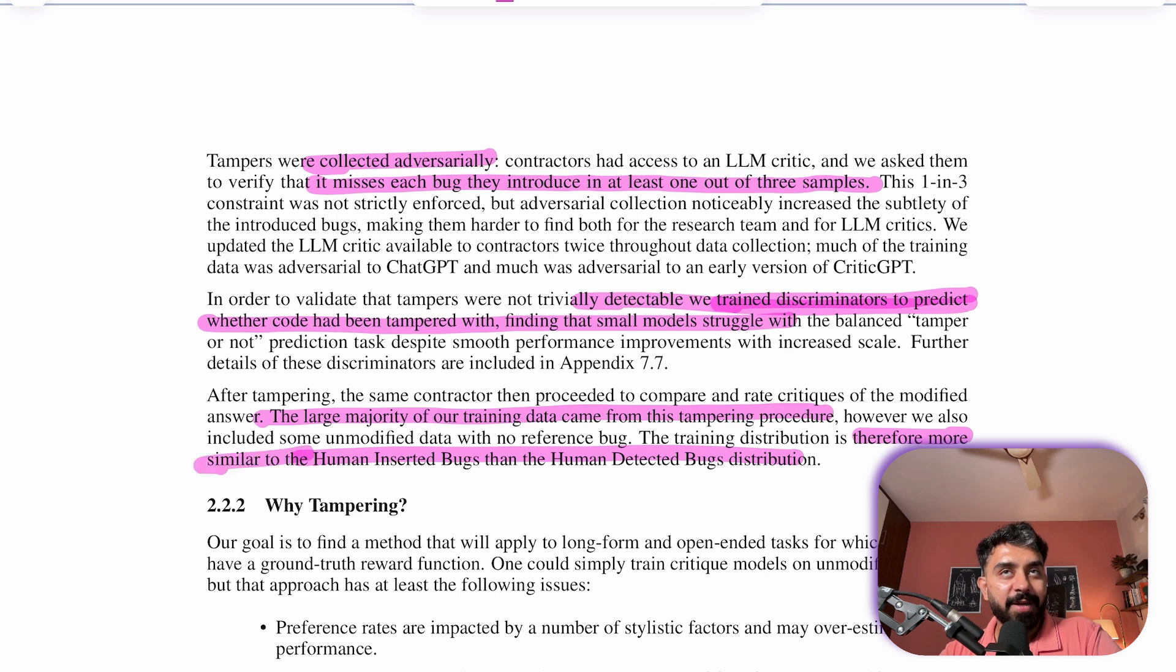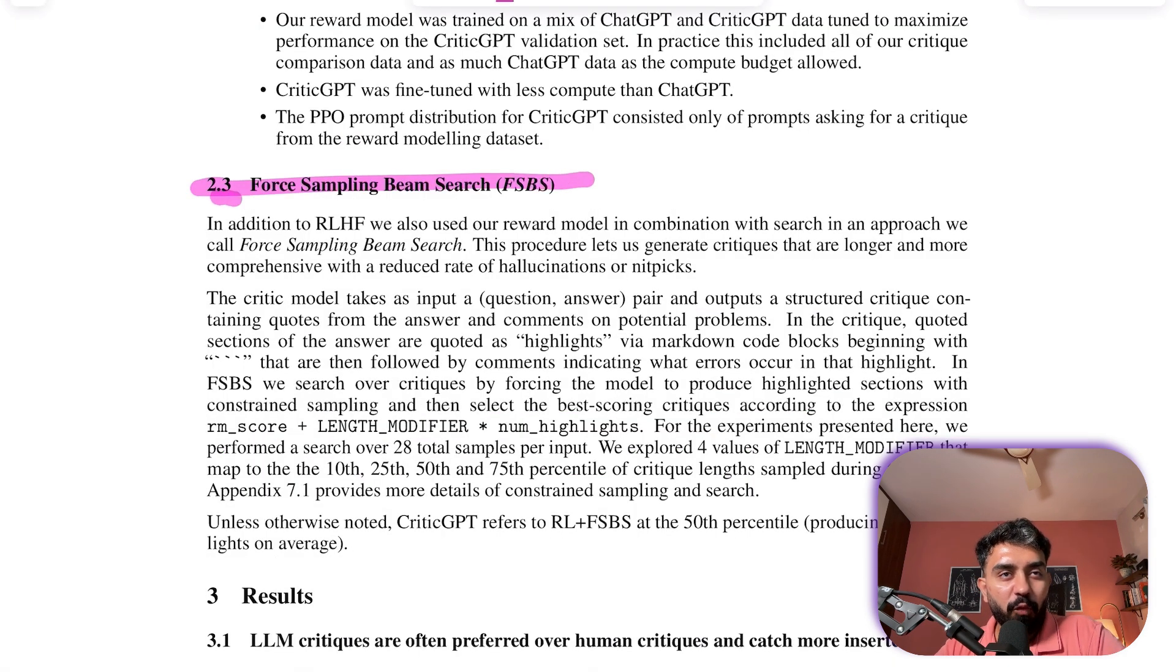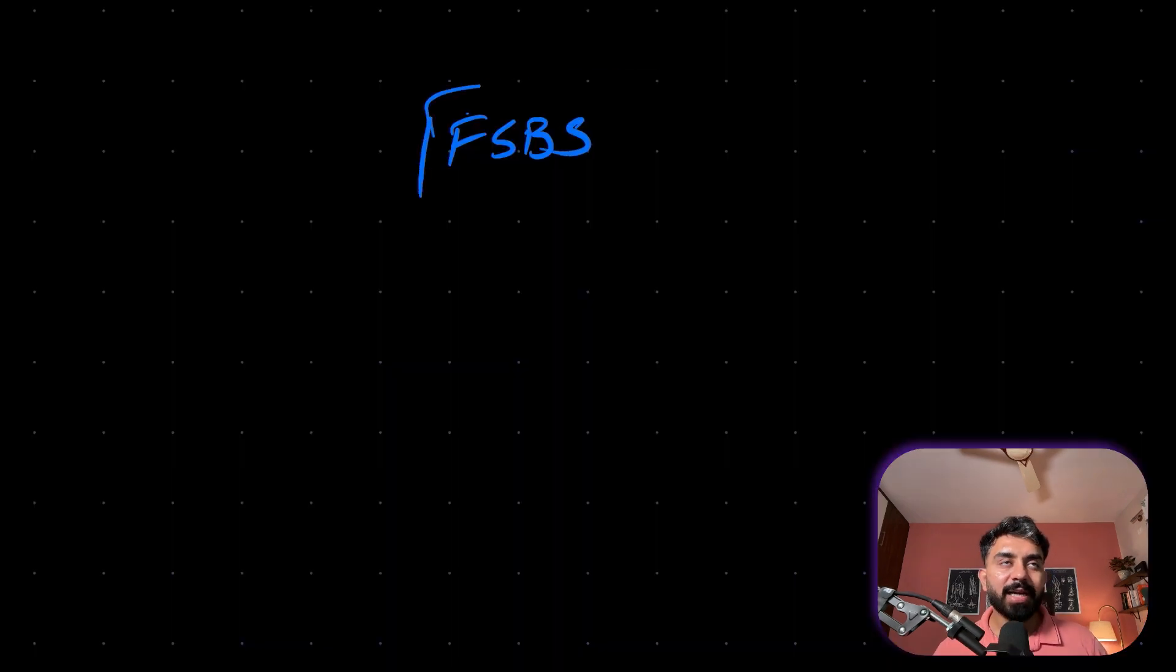The tampering procedure provides the majority of training data, making it more similar to human inserted bugs than human detected bugs. Now what is this Force Sampling Beam Search, FSBS approach that they have introduced and how have they used this? In addition to RLHF, FSBS combines a reward model with the search to generate longer and more comprehensive critiques, reducing hallucinations and nitpicks. Because whenever these models are critiquing a long code snippet, they tend to hallucinate and make up answers.